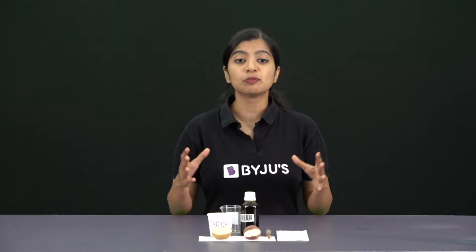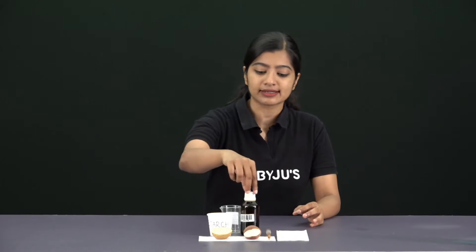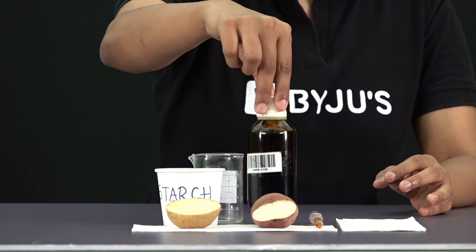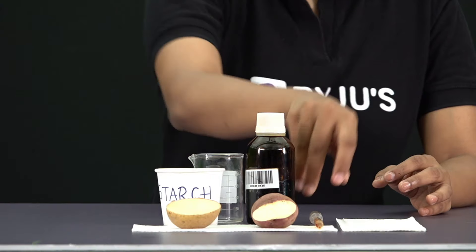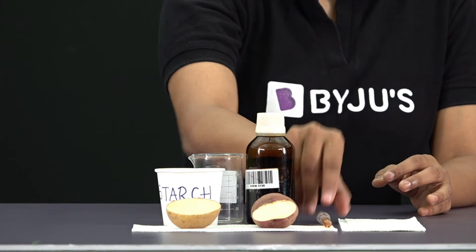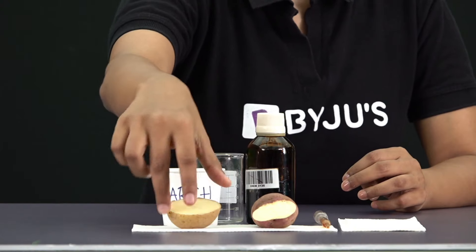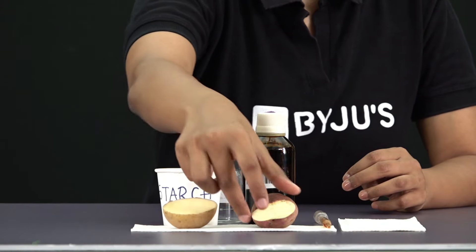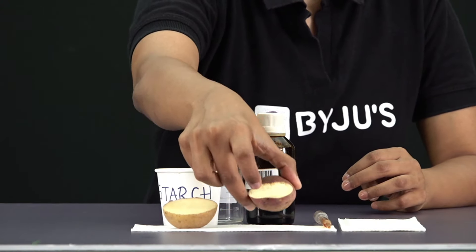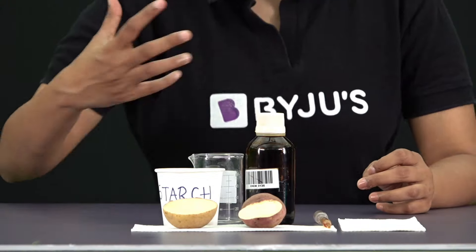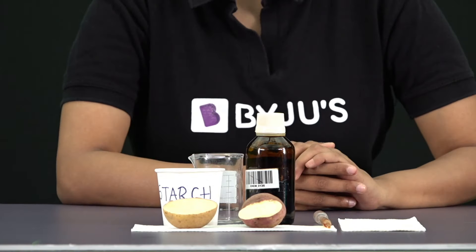Now let's first understand what are all the ingredients that we would require to carry this out. Since we call this the iodine test, we would require iodine as you can see here. We will need a dropper to put the iodine solution. I also have some samples with me — potato and sweet potato, which are claimed to be rich sources of carbohydrates.